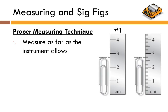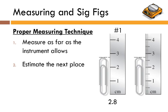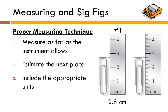You want to measure as far as the instrument allows. On ruler one, the smallest increment is a centimeter, and I can say with 100% confidence that the height of the paperclip is somewhere between 2 and 3 centimeters. I then estimate the next place — the tenths place — so I get 2.8. Include the appropriate units, so the measurement is 2.8 centimeters. Maybe you see 2.7 or 2.9 centimeters — that's fine. The important part is that the tenths place has been estimated; you're communicating that that digit is uncertain.